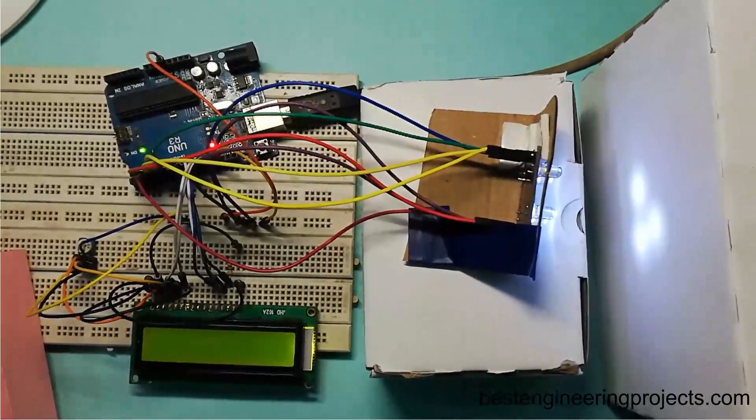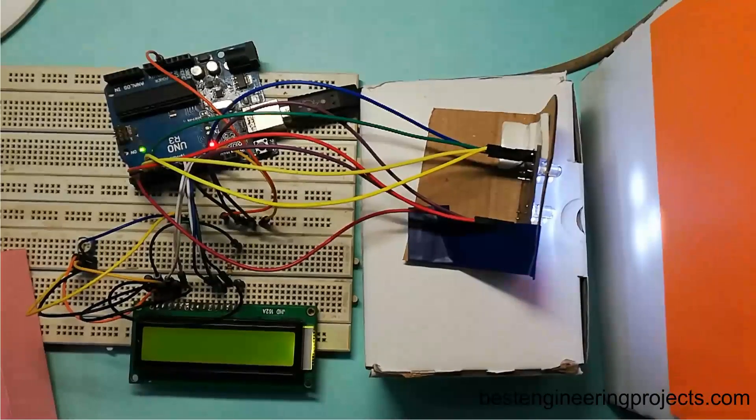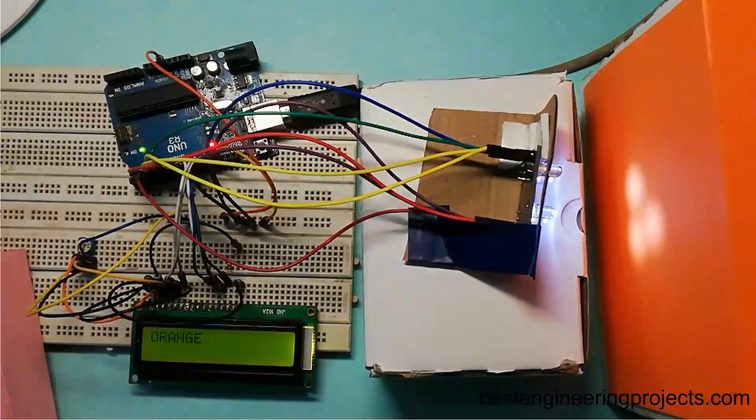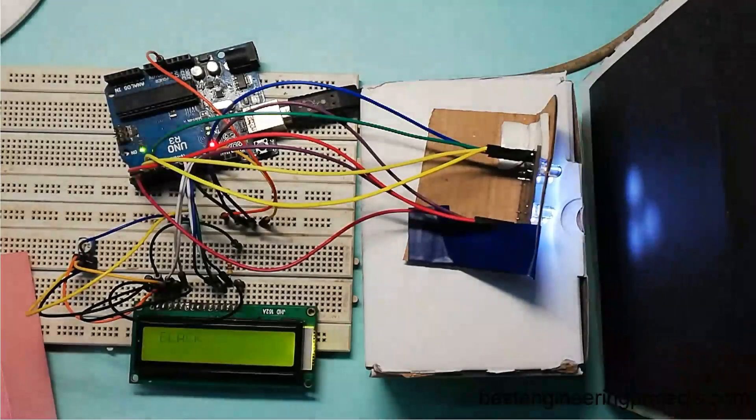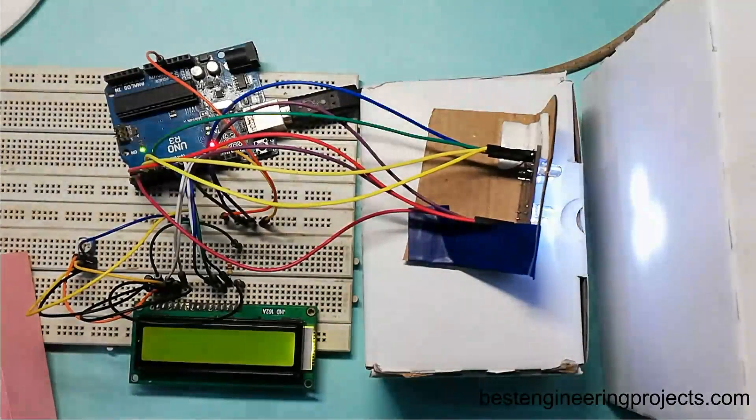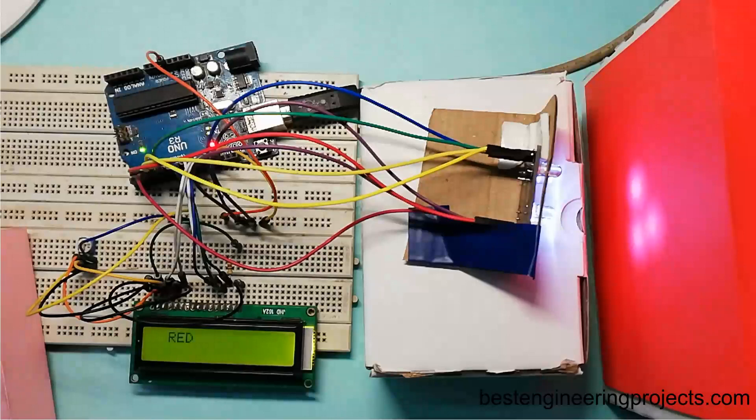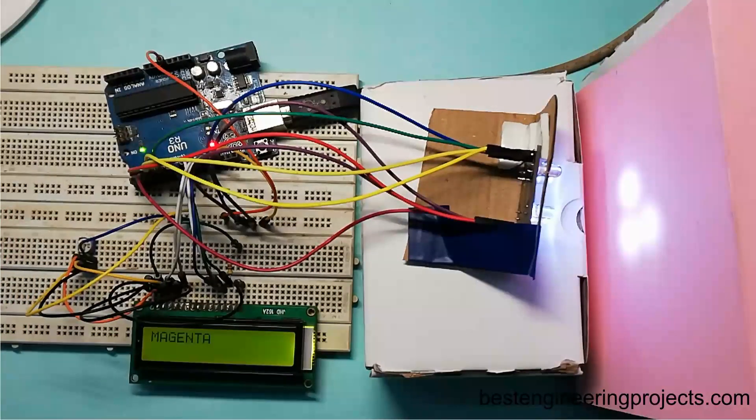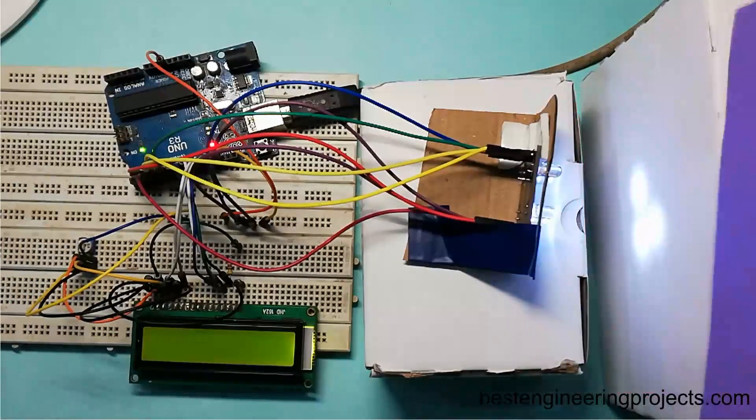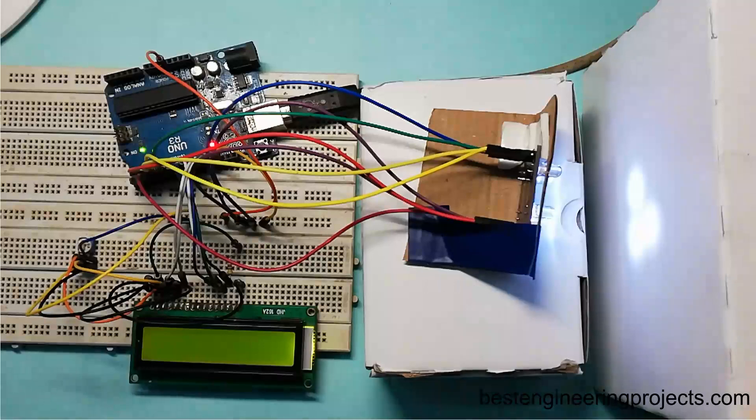Now, after uploading the final code to your Arduino UNO board, let's see the output of this project. Orange, orange, black, red, magenta, violet, and yellow.